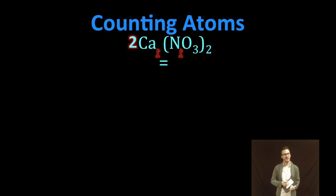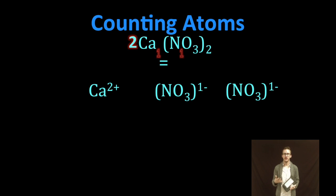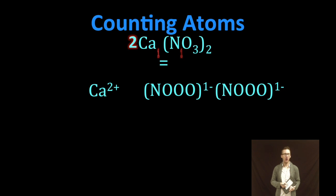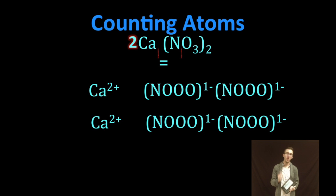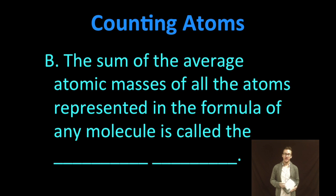So as we take a look at this, again, a single formula unit of calcium nitrate would have one calcium and two nitrates or one calcium and two nitrogen and six oxygen. Two formula units then would have two calcium ions and four nitrate ions. Okay, last couple of things then,